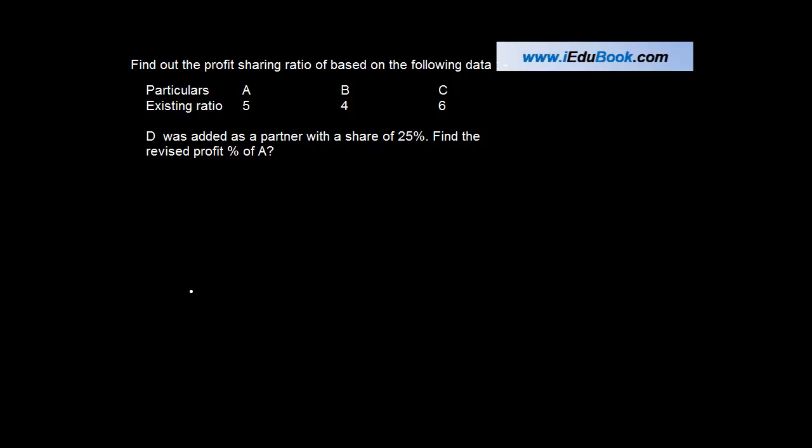Find out the profit sharing ratio based on the following data. Particulars ABC, existing ratio 5 is to 4 is to 6. D was added as a partner with a share of 25 percent. Find the revised percentage of A.